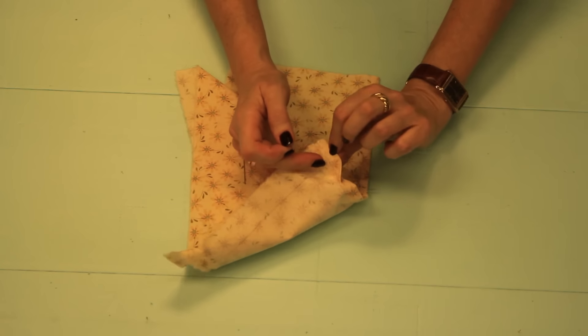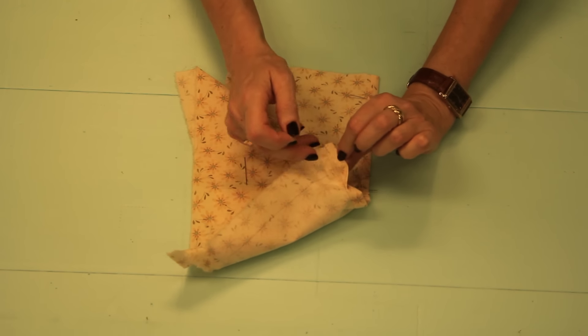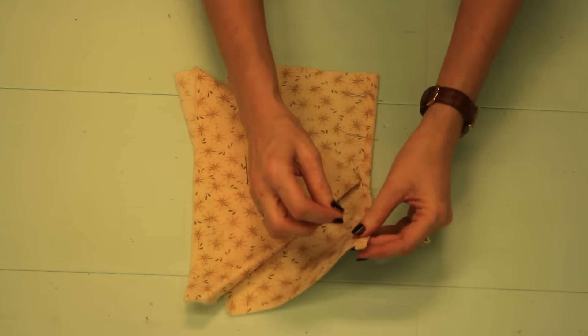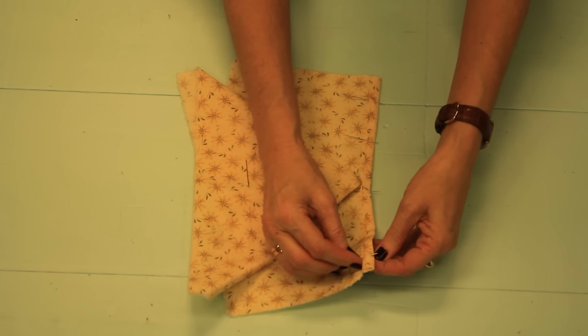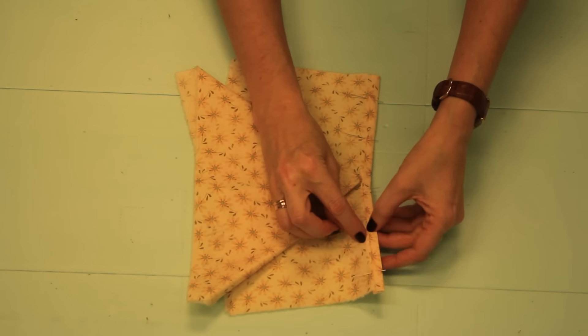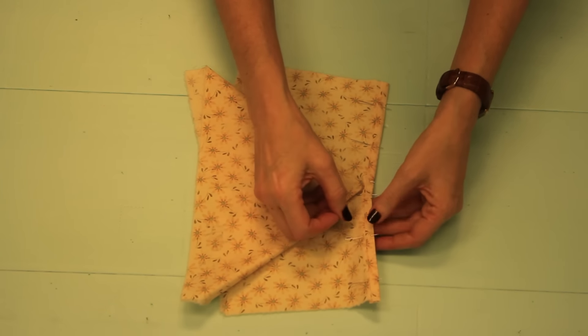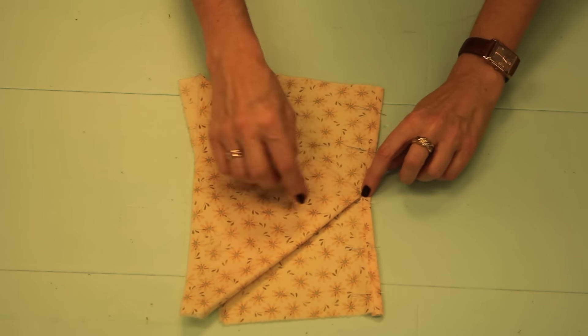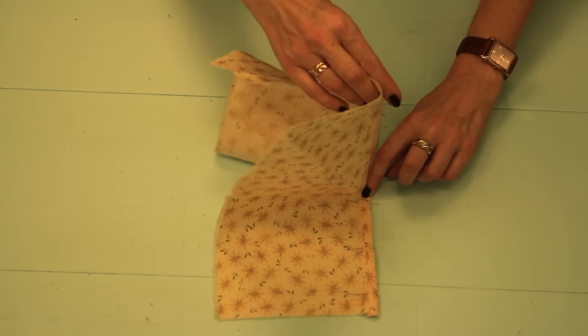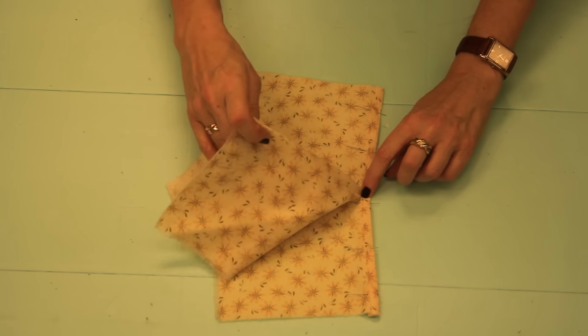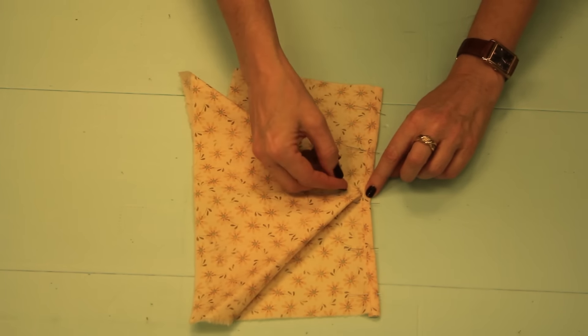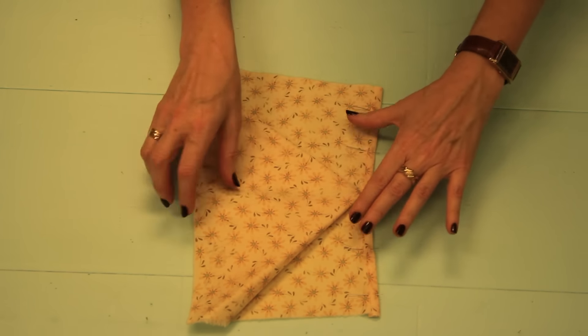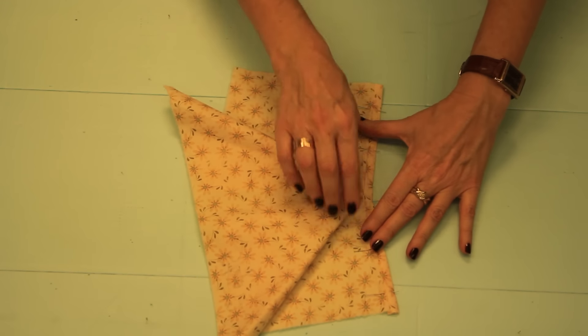So now we've pressed the seam allowance into the placket. Press the placket so that it binds the raw edge. We are pinning from the right side because we want to stitch here, stitch in the ditch, and at this pivot point we want to be able to keep an eye on all this extra shirt fabric so that we don't stitch down a tuck. We want this to really live free. So we'll stitch that.